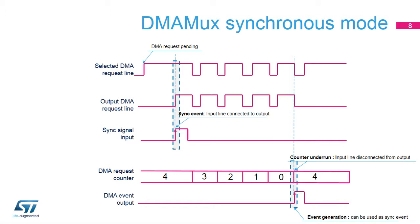When the DMA MUX channel is configured in synchronous mode, the request multiplexer input from the peripheral can become active, but it will not be forwarded on the DMA MUX request multiplexer output until the synchronization signal is received. When the sync event is received, the request multiplexer connects its input and output, and all peripheral requests will be forwarded. Each DMA request forwarded will decrement the request multiplexer counter. When the counter reaches 0, the connection between the DMA controller and the peripheral is cut, waiting for a new synchronization event. For each underrun of the counter, the request multiplexer line can generate an optional event to synchronize with a second DMA MUX line. The same event can be used in low-power scenarios to switch the system back to stop mode without CPU intervention.